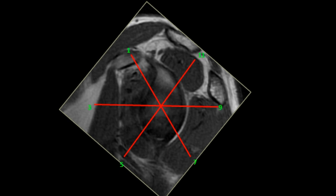We prefer to use the quadrant method where we talk of the superior, posterior superior, posterior inferior, inferior, anterior inferior and anterior superior quadrants of the labrum. For example, I will describe a tear as: tear involving the entire anterior labrum extending across 12 o'clock up to the posterior equator. This gives the surgeon the entire extent of the labral tear so that he can plan the surgery accordingly.